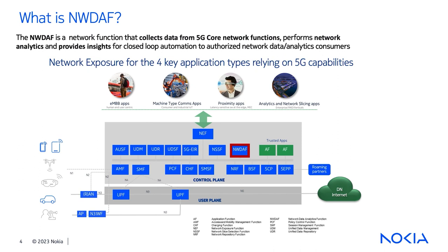The NWDAF leverages artificial intelligence and machine learning to process and analyze large amounts of data, enabling the network to better respond to varying demands and conditions. The primary responsibilities of NWDAF include: first, collecting and storing data from other network functions; then processing and analyzing this data to generate useful insights; and providing these insights to other network functions so they can operate more efficiently based on the predictions provided by NWDAF. It helps automate management for network optimization tasks such as load balancing, traffic prediction, network slice management, and anomaly detection.